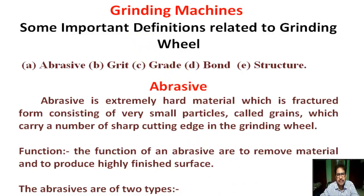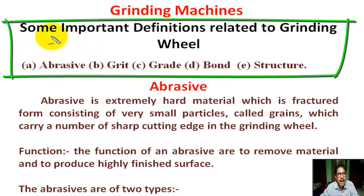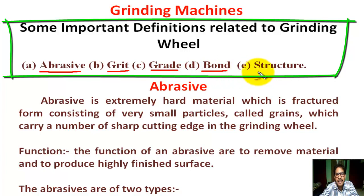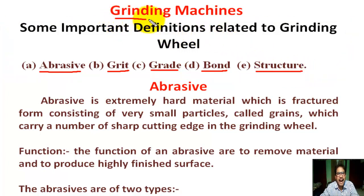Hello students, today we are going to learn some important definitions related to grinding wheel: (a) abrasive - what is abrasive, (b) grit - what is grit, (c) grade - what is grade, (d) bond - what is bond, (e) structure - what is structure. Chapter name: Grinding Machines.